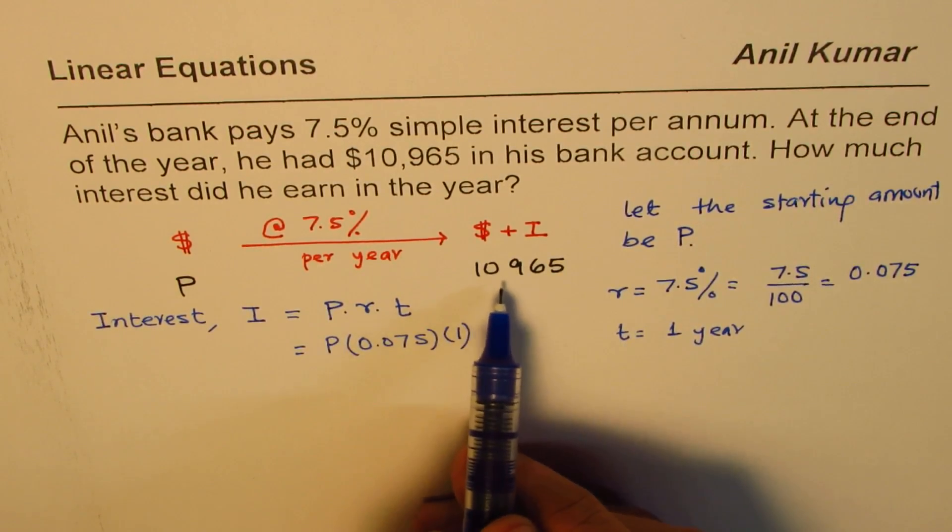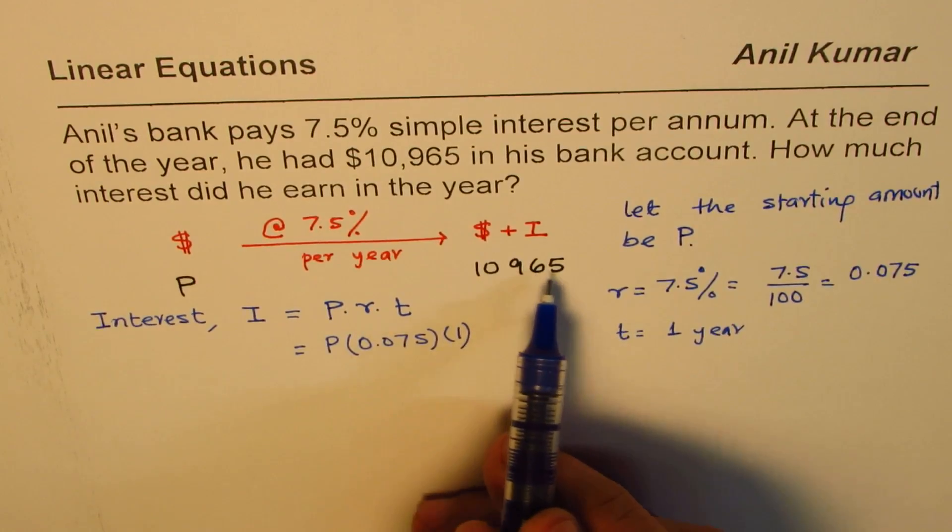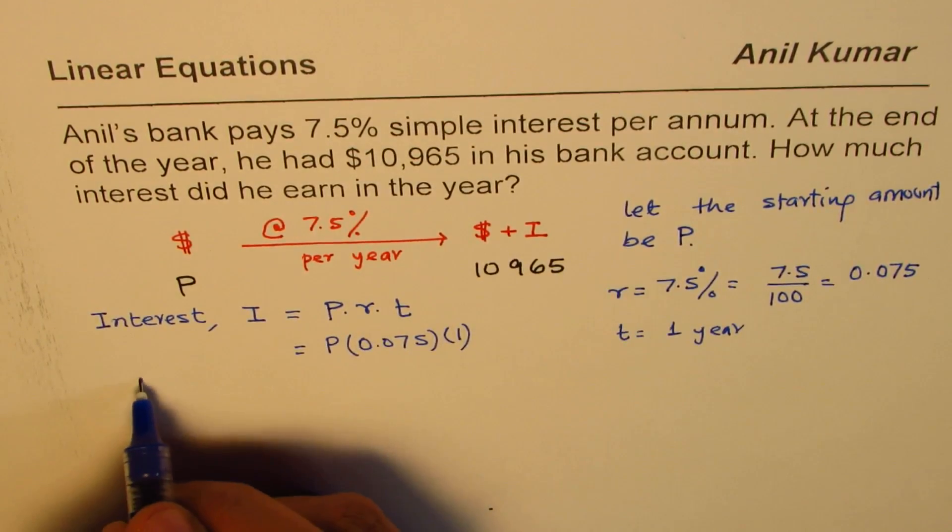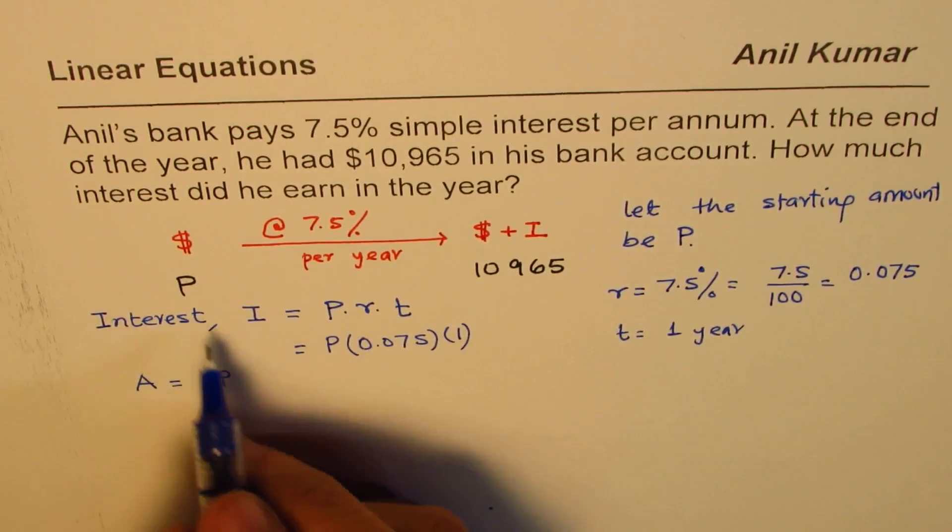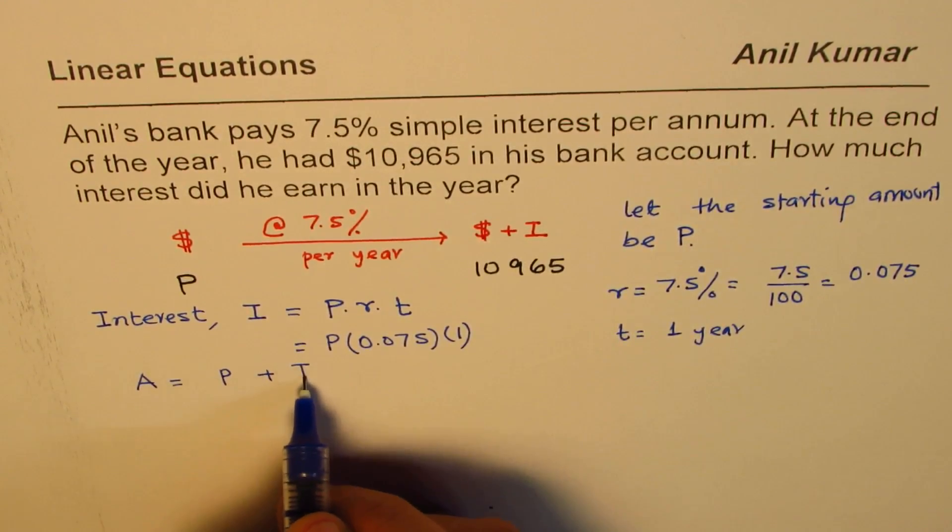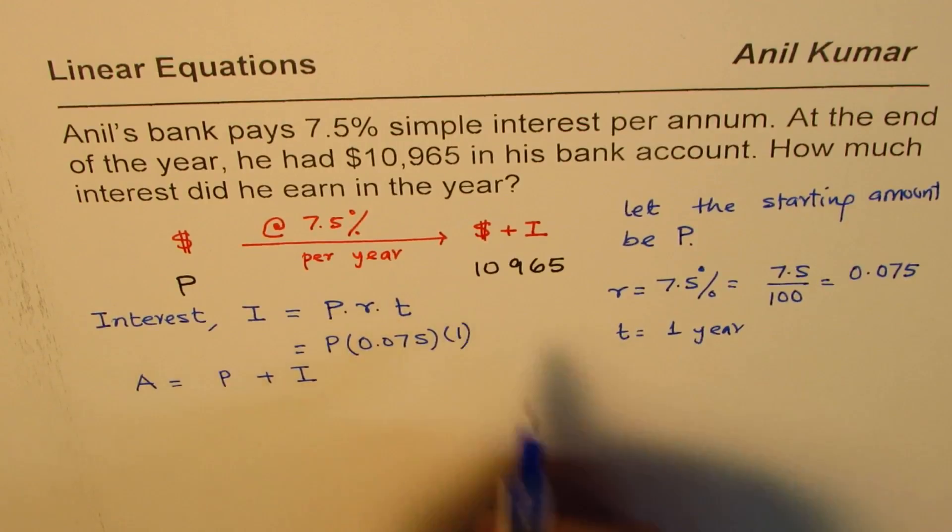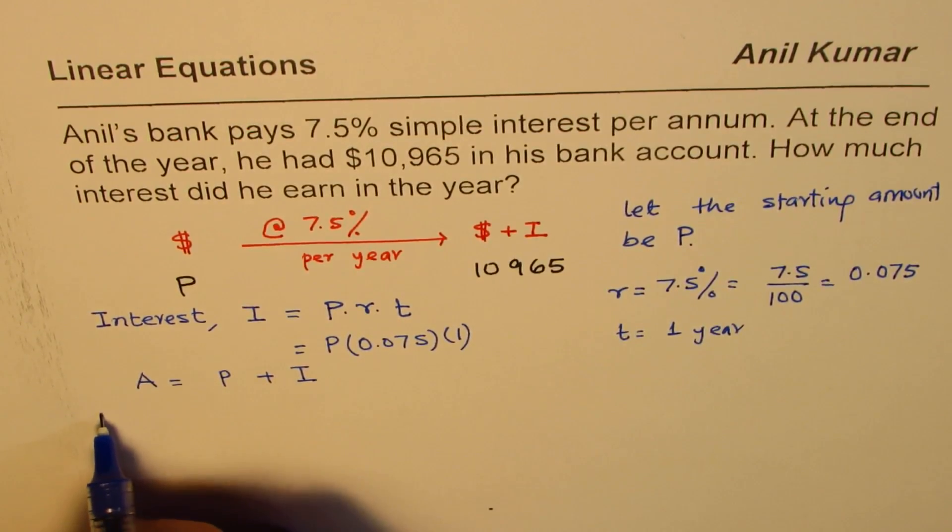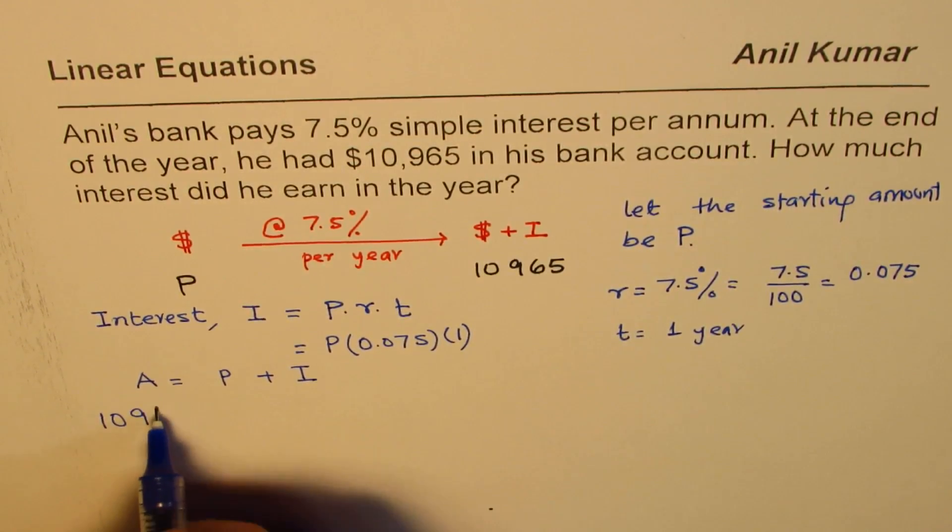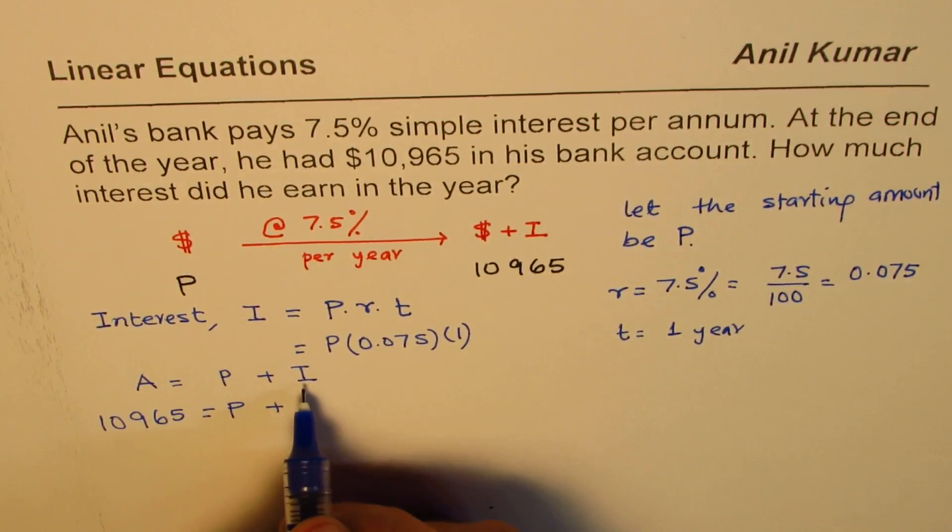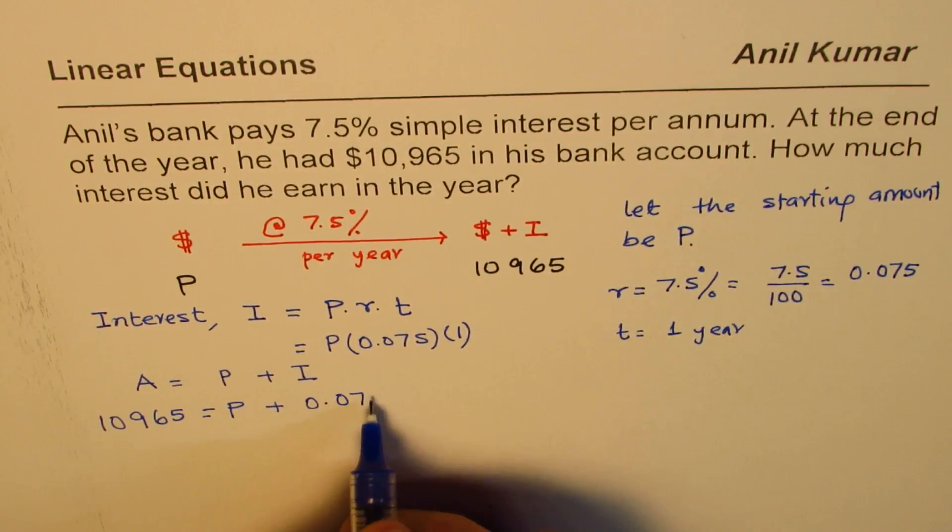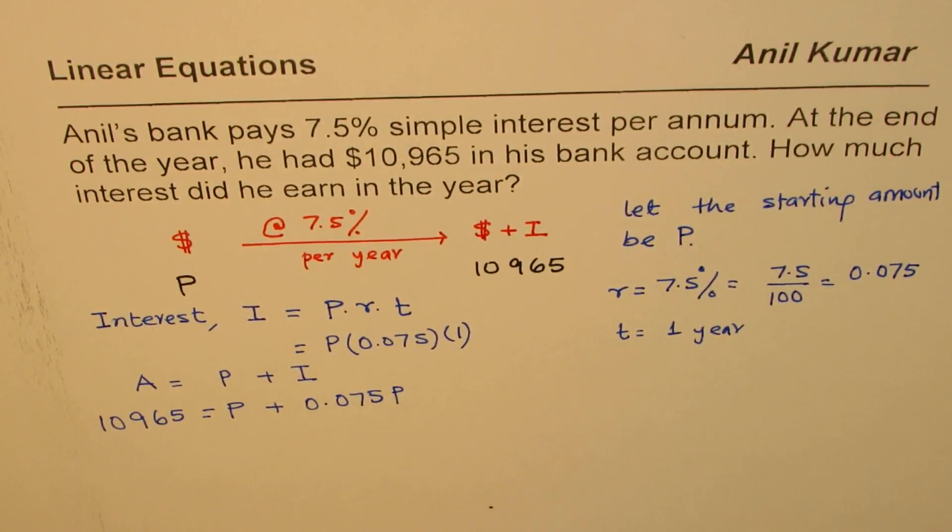Now, final amount is how much? 10,965. So, the final amount A is actually starting amount P plus the interest. What we are given here is the final amount which is 10,965. We want to find principle we don't know but we know interest in terms of principle which is 0.075 P.